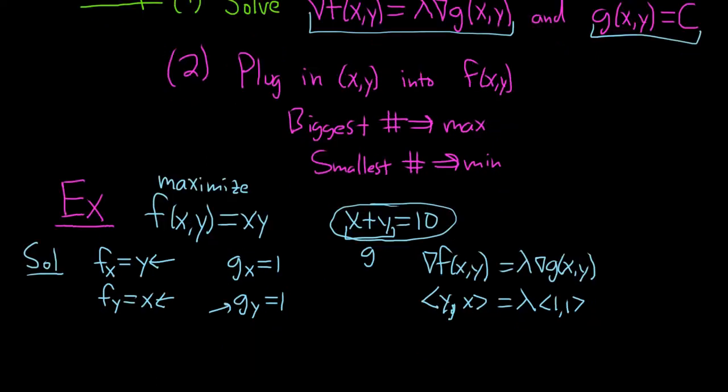Let's keep going. So we have y, x equal to lambda, lambda. So that means that lambda is equal to y, and also that lambda is equal to x. They're both the same. This means lambda is y and lambda is x. So this means that x is equal to y.